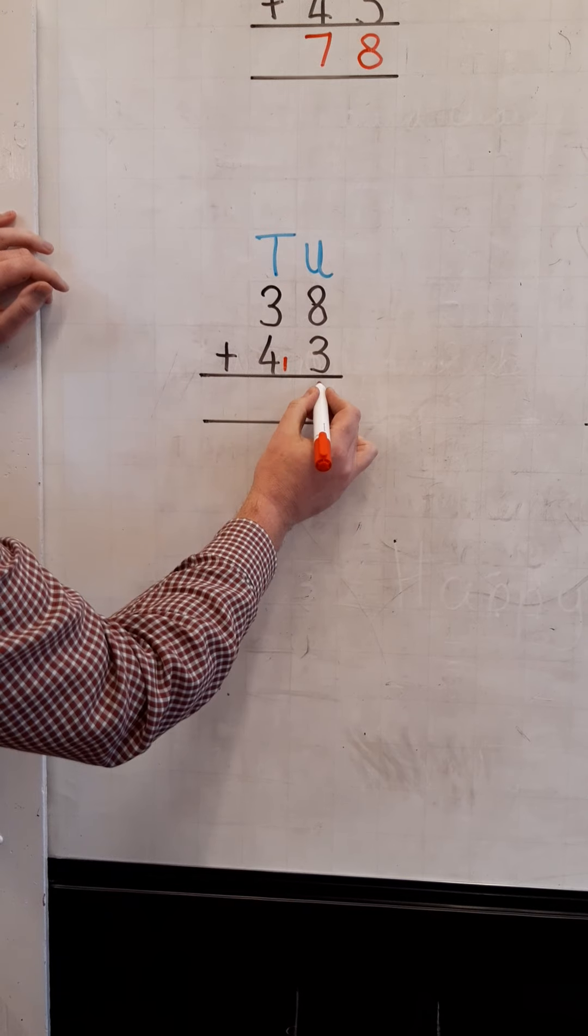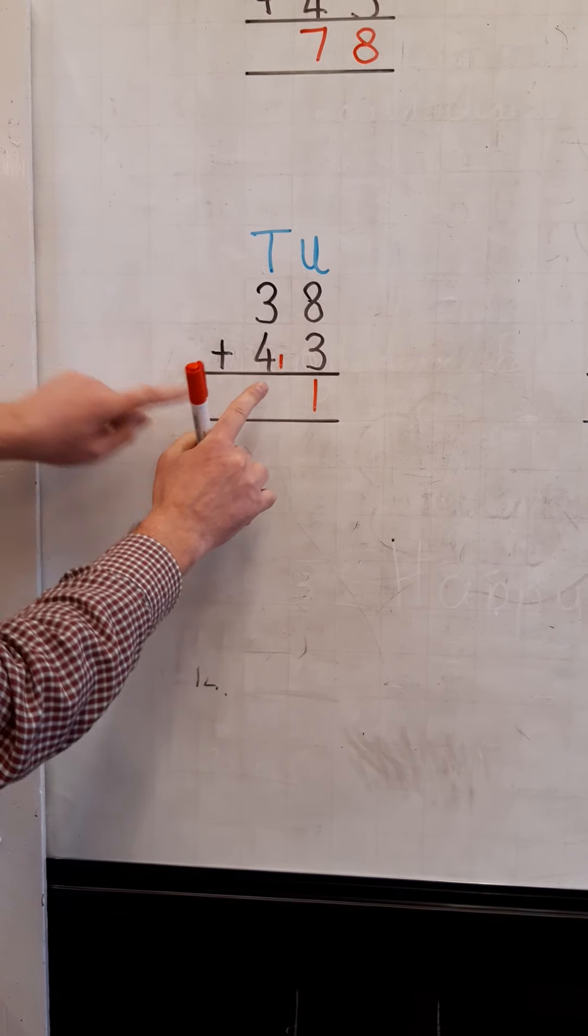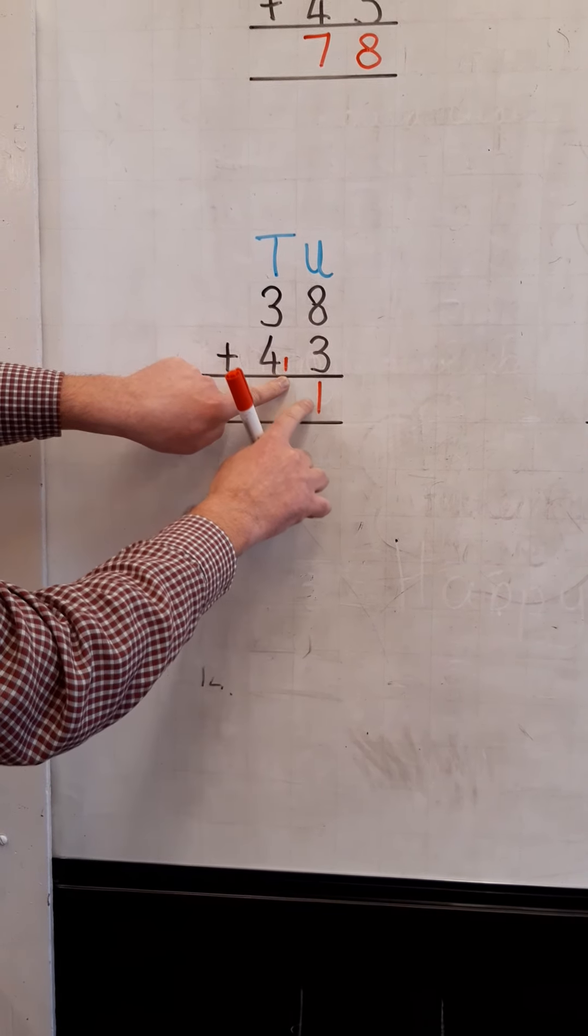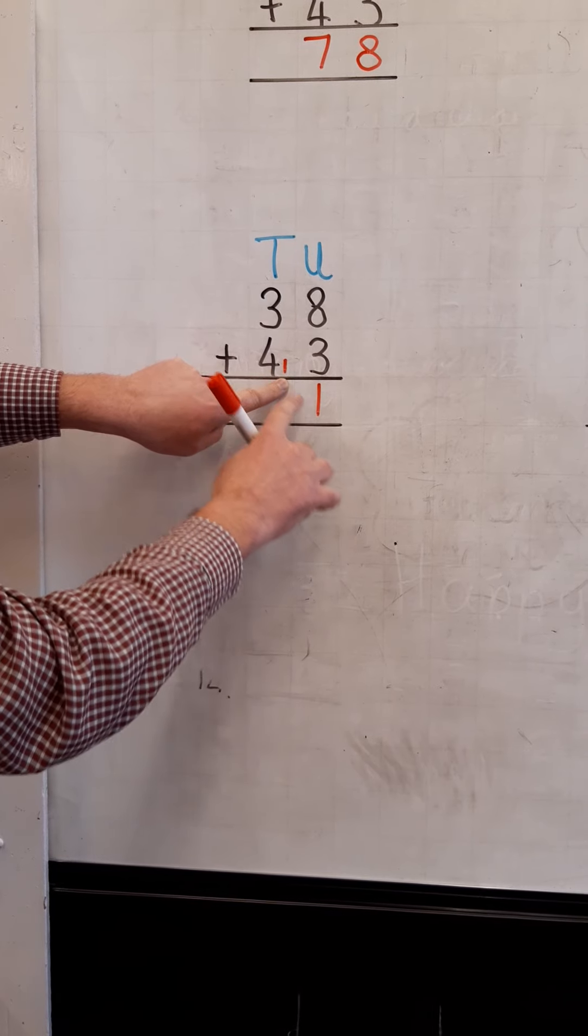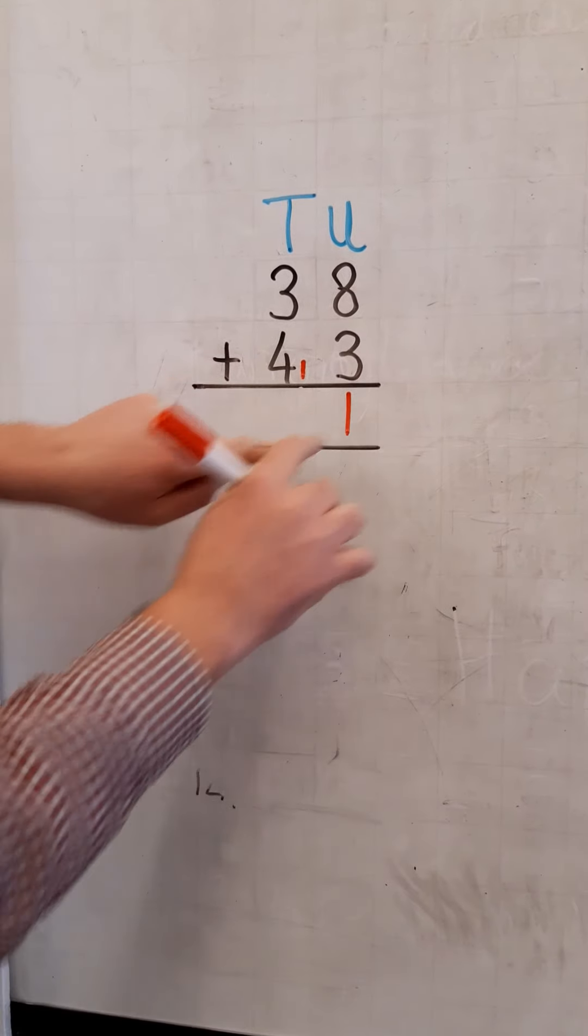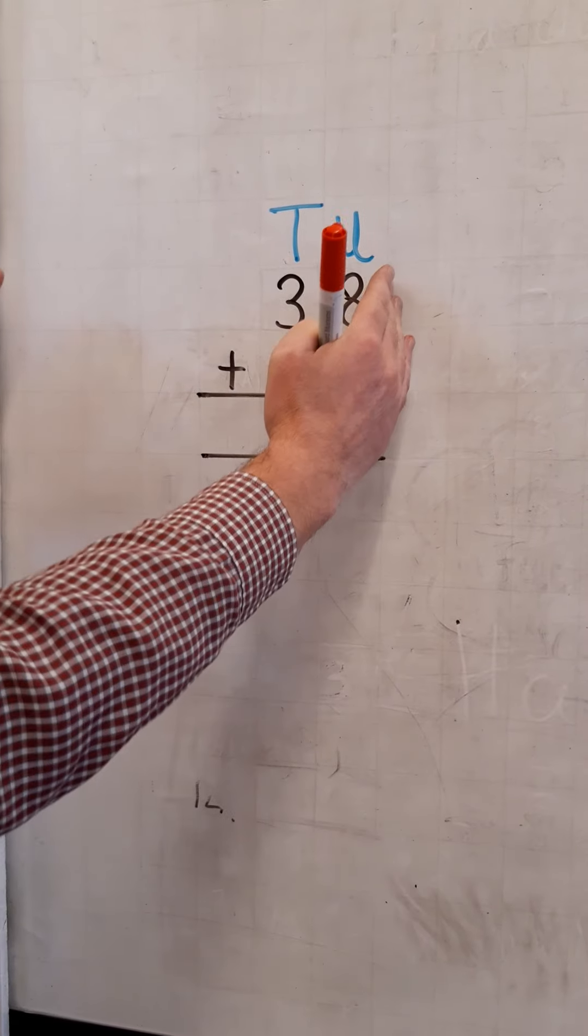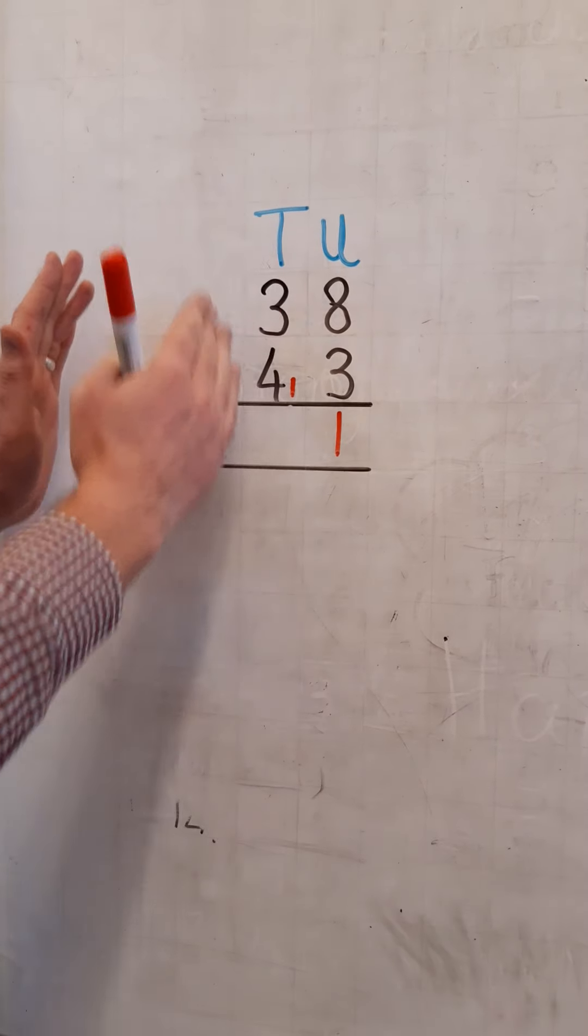One ten, one unit. And if you look closely, you can still see the number eleven. It's still there. One ten, one unit. Now, we're finished with the units, so we move on to the tens place.